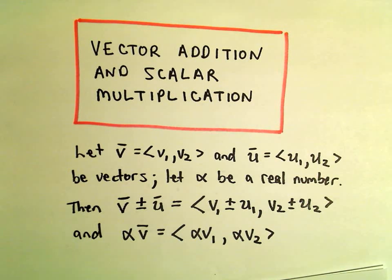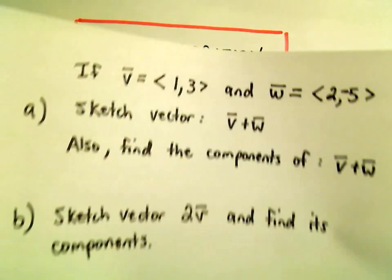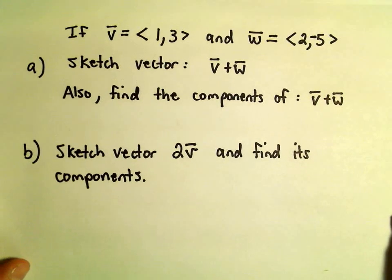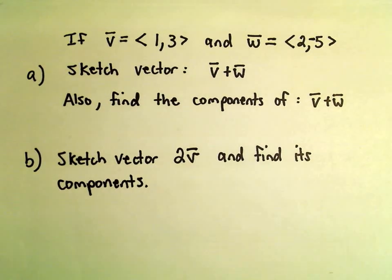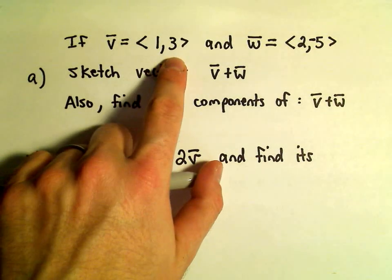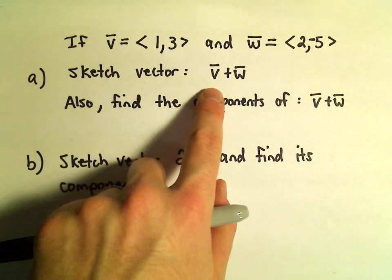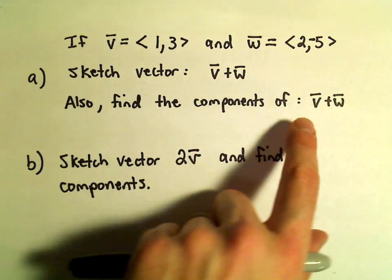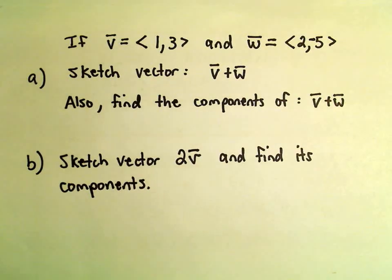Okay, in this video we're going to do an example again related to vector addition and scalar multiplication. We're also going to talk about sketching some vectors, the sum of vectors. So we've got vector v that has components 1, 3, and w equals 2, negative 5. We're going to sketch the vector v plus w and we'll also find the components of that vector.